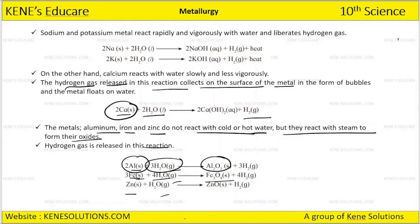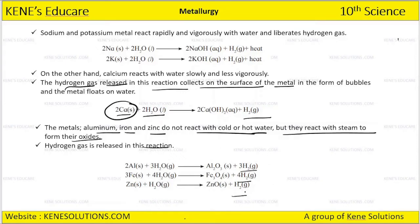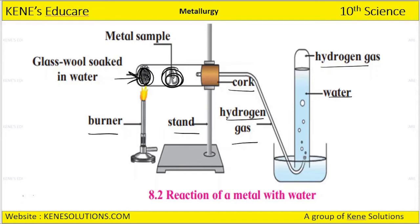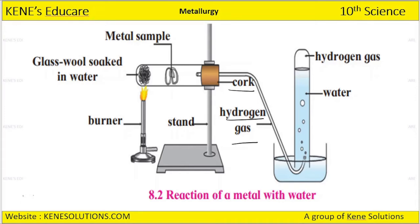Aluminum reacts with water vapor to form aluminum trioxide. Iron reacts with steam to form ferrous oxide. Zinc reacts with water vapor to form zinc oxide. In all these reactions, hydrogen gas is also liberated. The experimental setup shows the metal sample with glass wool soaked in water, a burner, and a stand — when the metal sample reacts with water vapor, there is liberation of hydrogen gas.